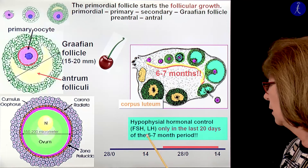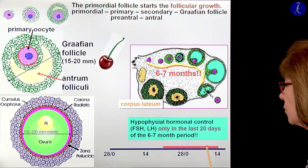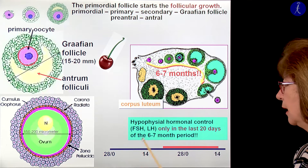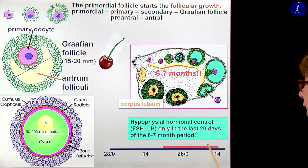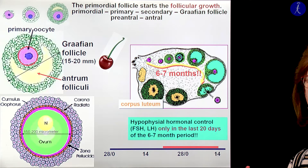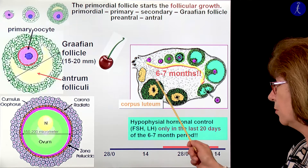Only the last 20 days of the follicular growth is under the control of the pituitary hormones — like LH and FSH, mainly FSH first. The follicle-stimulating hormone stimulates the follicle, and the LH surge induces the ovulation. So from these 6 to 7 months, the pituitary hormones play a role only in the last 20 days — and even these 20 days is longer than the 14 days suggested by many books. Don't forget: follicular growth is 6 to 7 months until ovulation.